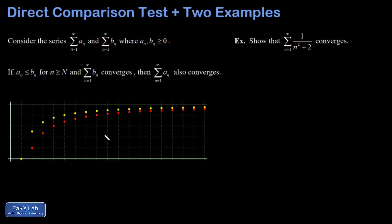In this video, we're talking about the Direct Comparison Test and the case of convergence and the case of divergence. On this slide, we're talking about convergence. The idea in this picture is that I'm looking at a sequence of partial sums in yellow for the series BN.